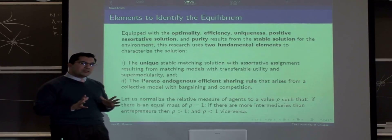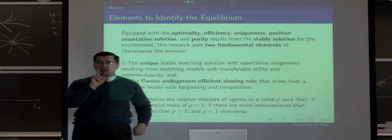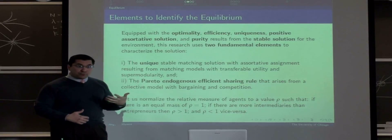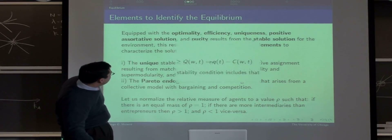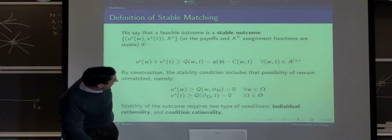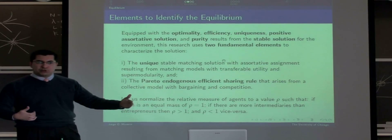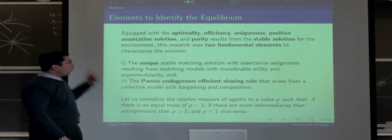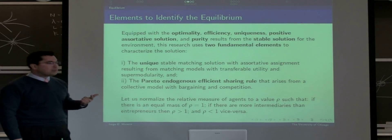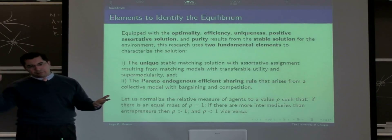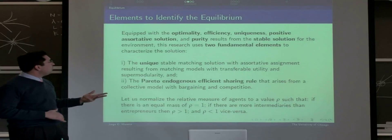Under very elementary conditions, when we are just matching in one variable, we can prove that this stable condition, by identifying the stable condition, the equilibrium implied by this stable condition, which is an interest rate and allocation, is optimal, efficient, unique, positive assortative under the framework of marginal cost decreasing, and pure.